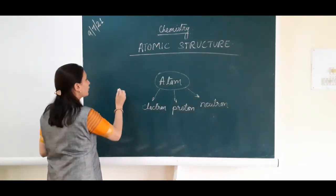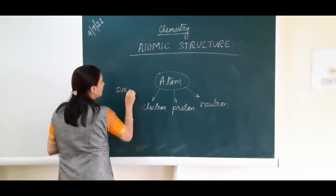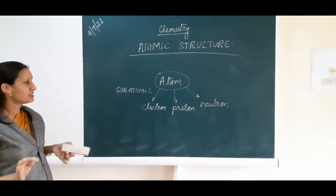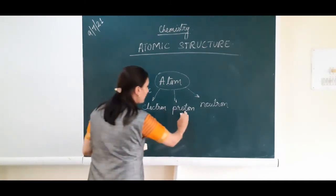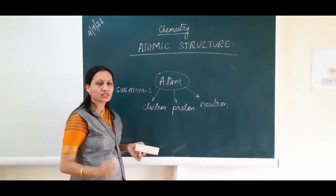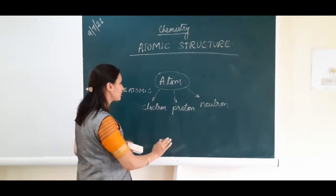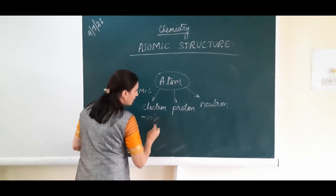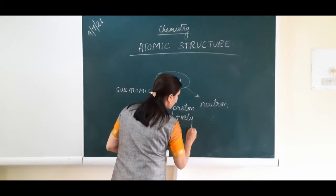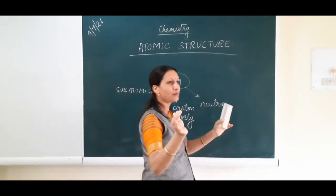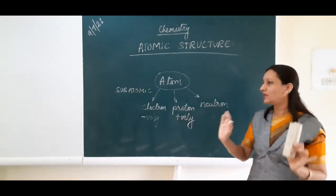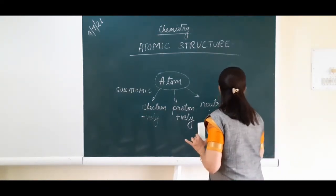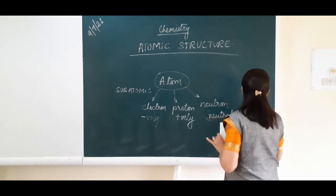These are subatomic particles of atom, meaning atom can be divided. If you compare these three subatomic particles, scientists have studied their nature: electrons are negatively charged, protons are positively charged, and neutrons — from the name itself it is clear — are neutral, meaning no charge.